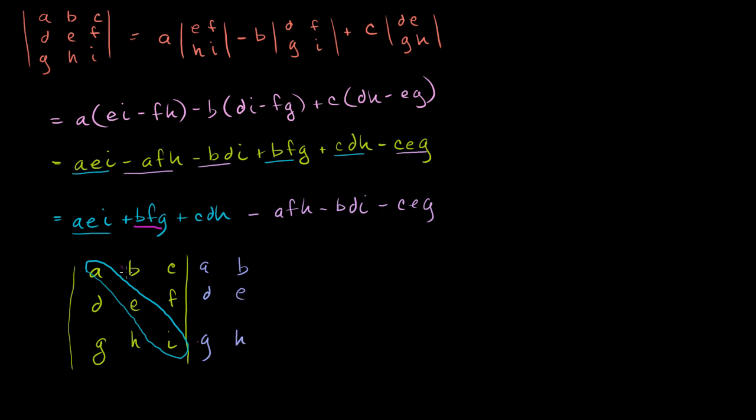This guy right here, BFG, it's this one right here. It's this diagonal right there. And then you might guess what's about to happen. Where is CDH? It's this diagonal. It's that diagonal right there. So you take this product, add it to this product, add it to this product, and then you subtract these guys.